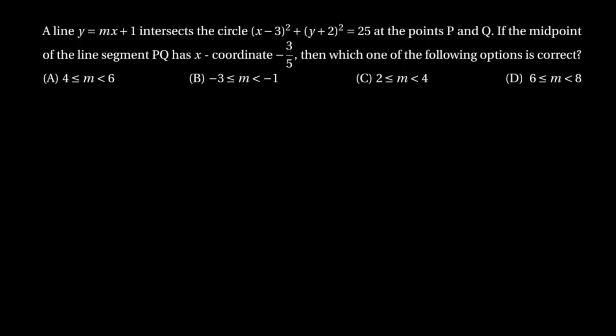Hello everyone. A line y = mx + 1 intersects the circle (x − 3)² + (y + 2)² = 25 at the points P and Q. If the midpoint of the line segment PQ has x-coordinate −3/5, then which one of the following options is correct?